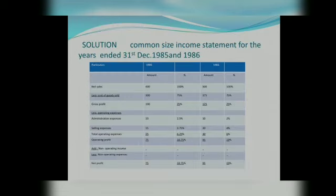Now, the Common Size Income Statement for the year ended 31 December 1985 and 1986. Particulars are listed with Amount and Percentage for each year. For Net Sales: the amount in 1985 is 400 and in 1986 is 500. All income and expense items are expressed as a percentage of Net Sales. Net Sales percentage = 400 divided by 400 = 100% for 1985; 500 divided by 500 = 100% for 1986.